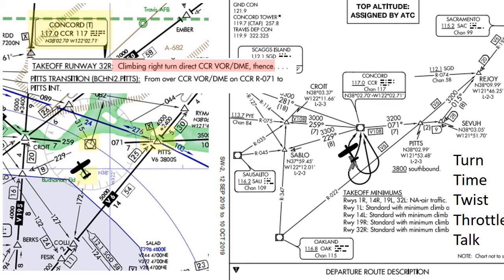After takeoff, we climb straight ahead to 400 feet above ground level — the standard before turning — before we recenter the needle with the OBS knob and turn right to whatever course is at the top. That's what they mean by direct to CCR. Our five T's are: turn right to the course at the top of the OBS; time — if we didn't start one before takeoff, it doesn't hurt to do it now; twist — there's nothing to do at this point because we've already set our OBS; throttle — stays full till 3,000; and talk — we can expect a change to departure soon, but for now we don't need to say anything.